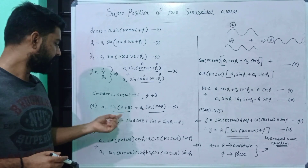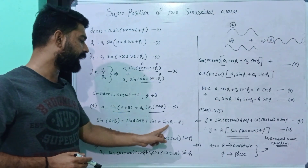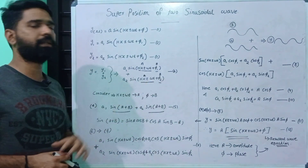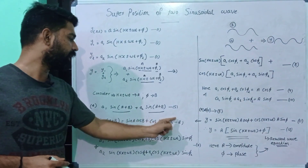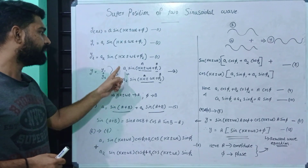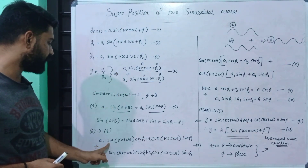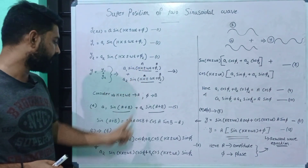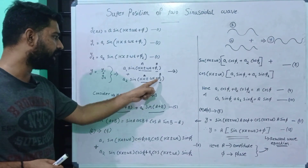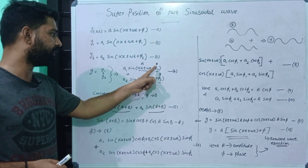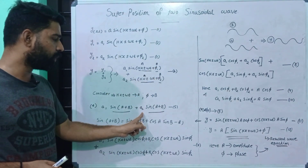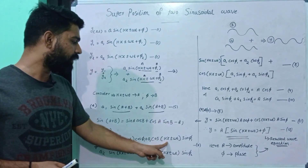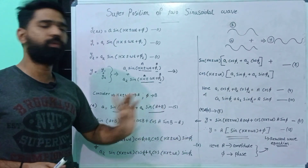sin(a + b) is equal to sin a cos b plus cos a sin b. If we substitute into this equation using this identity, A is equal to kx ± ωt, so we get sin(kx ± ωt) times cos b, where b equals φ, plus cos(kx ± ωt) times sin b, where sin b equals φ. Is it clear?